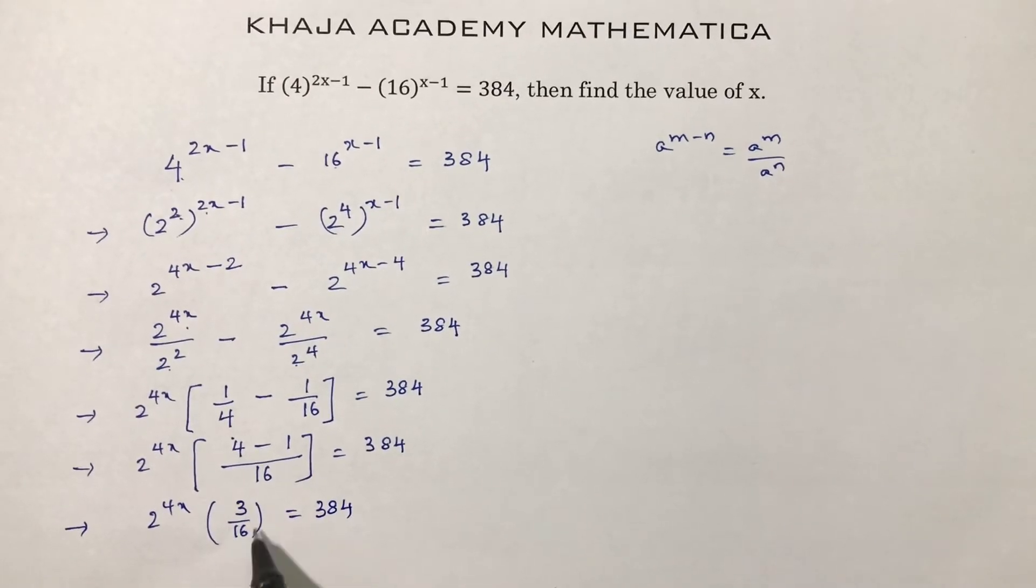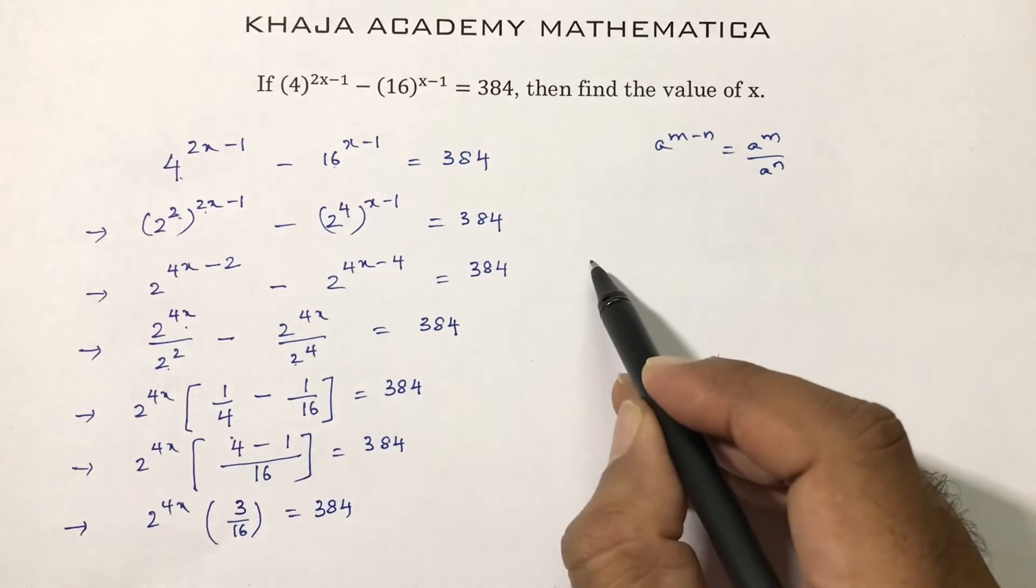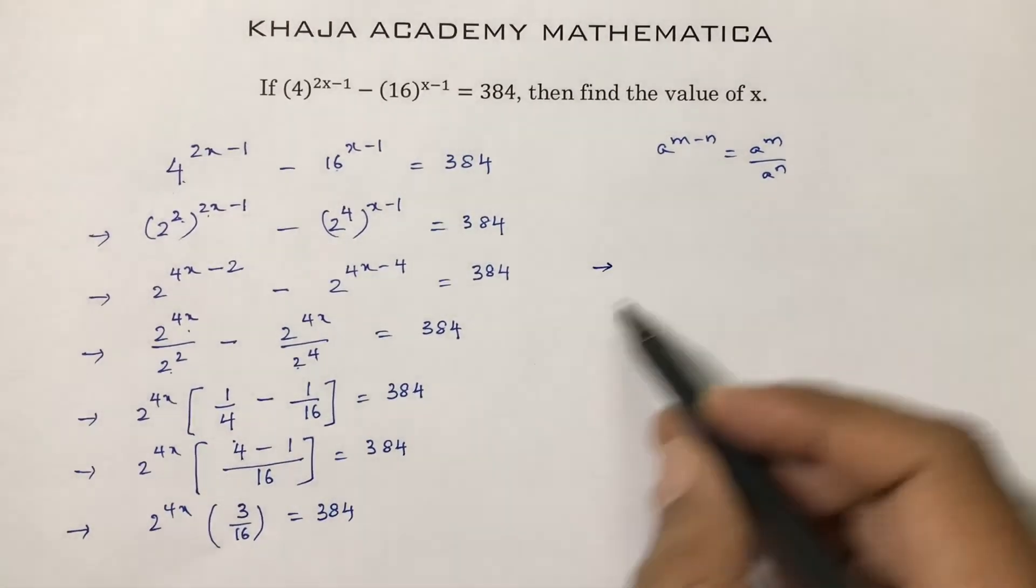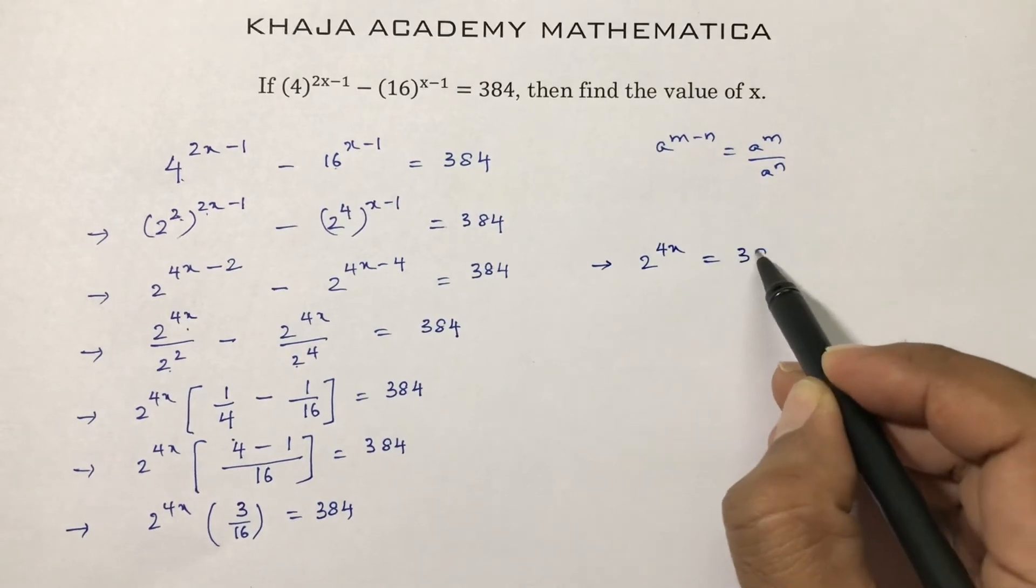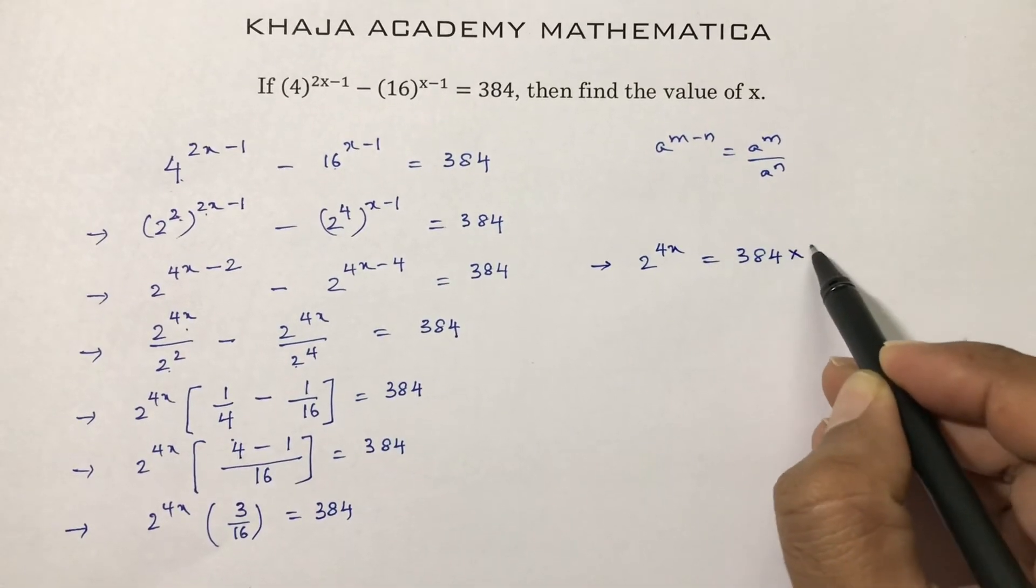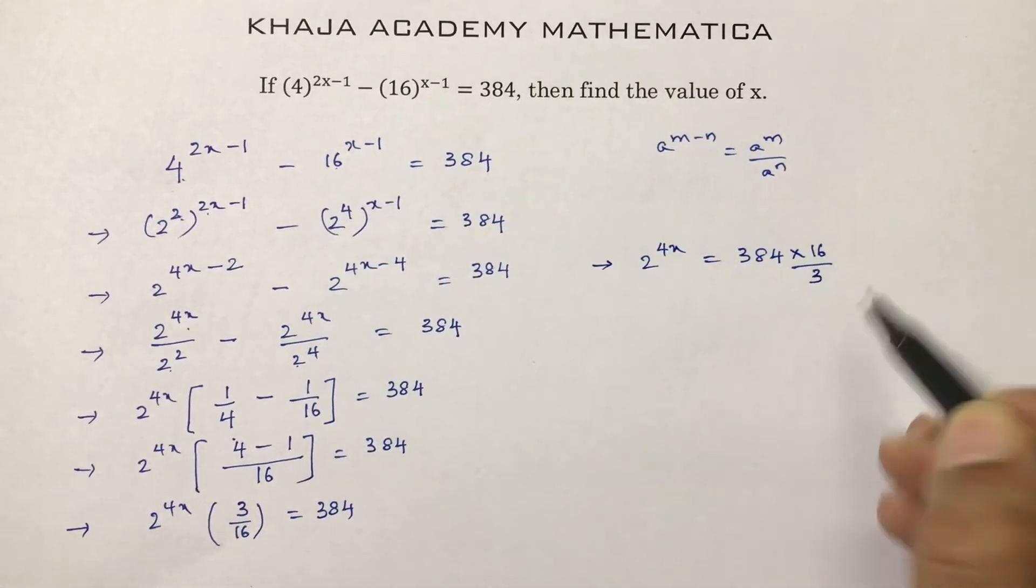If I will take this 3 by 16 to the other side, there will come 2 power 4x equals 384 into 16 by 3.